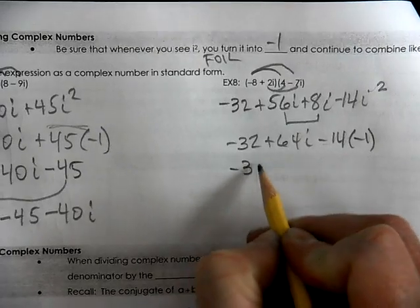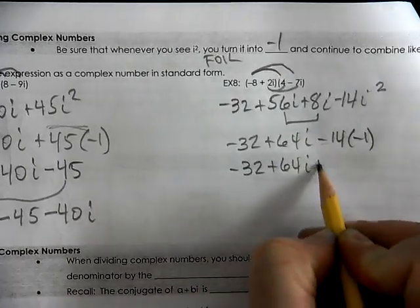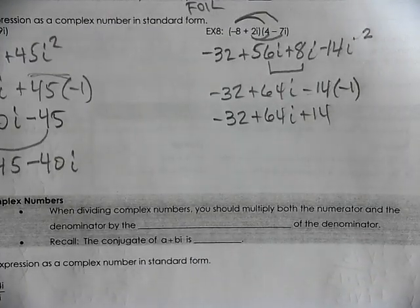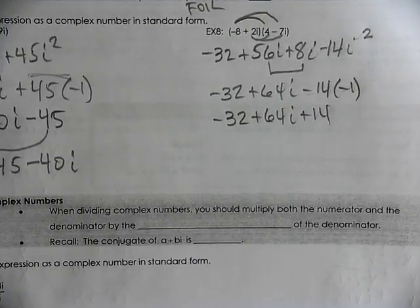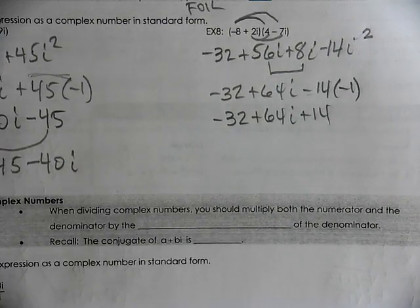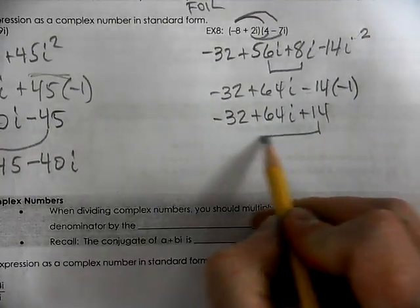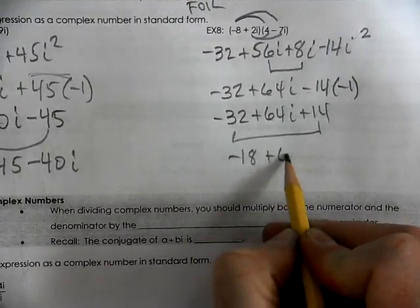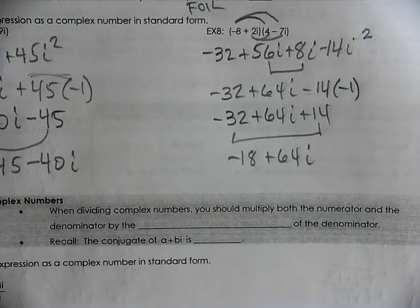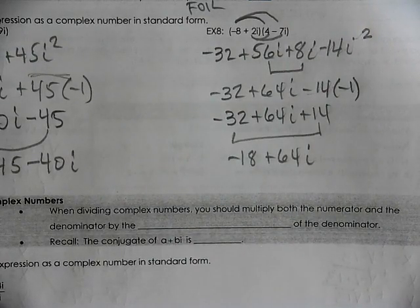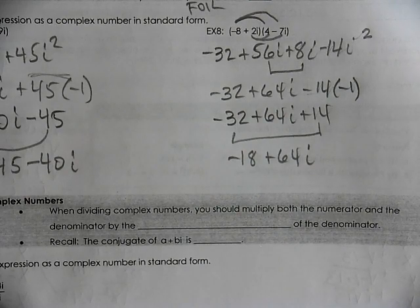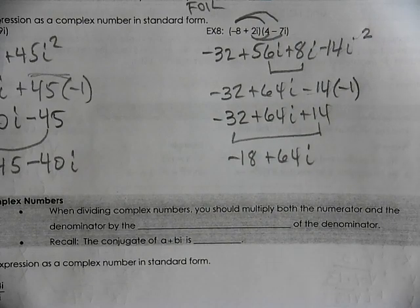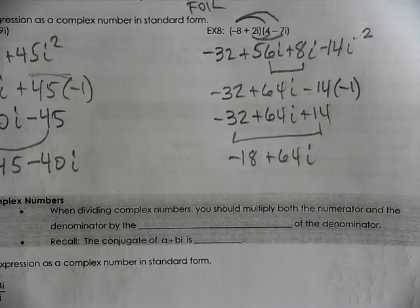56i and 8 more i's give you 64i, minus 14 times negative 1, which two negatives make a positive. Now what looks like our next step here? Put the real numbers together and be sure that they're first. So that's negative 18 plus 64i. Think about what we're doing. If you're at home and you need to pause the video, rewind it and listen to it again. Understand where these different numbers are coming from.